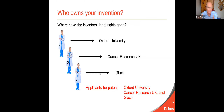In this case it is a combination of Oxford University, Cancer Research UK, and Glaxo that actually own the invention, and so they should be the applicants for the patent application. The point is that simply being an inventor doesn't mean you can automatically file a patent application in your own name. You have to look rigorously at who the inventors are, then rigorously at where all the rights of the inventors have gone, and carefully establish who the applicants need to be.